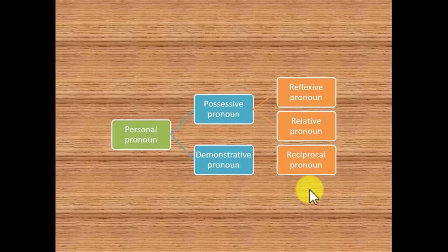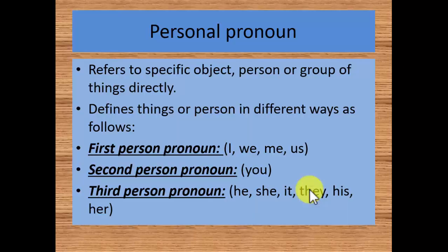There are actually 6 specific types of pronouns. Personal Pronoun, Possessive Pronoun, Demonstrative Pronoun, Reflexive Pronoun, Relative Pronoun, Reciprocal Pronoun. Now we will discuss these 6 examples one by one. Let's move on.